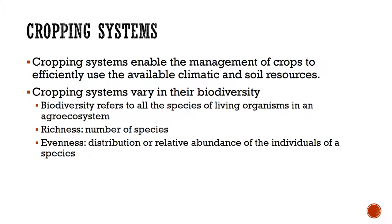Cropping systems help the producer enable the management of crops efficiently and use different variables like climatic variables and soil resources to their best ability. So what does it give us? A huge diversity of biodiversity. It's going to give us a richness or number of species of that main plant, an evenness distribution among the entire field — growing many different types of those species at an even number. And the biodiversity, the macro and micro organisms living in that system, whether it's an agroecosystem or an ecosystem, are very important.